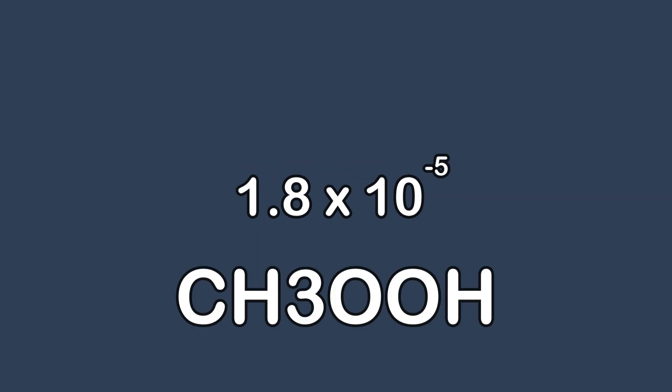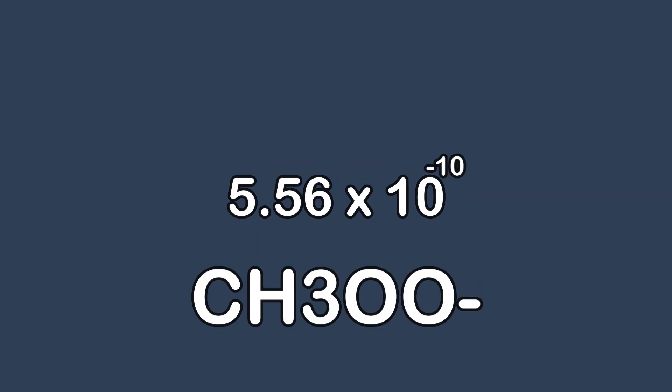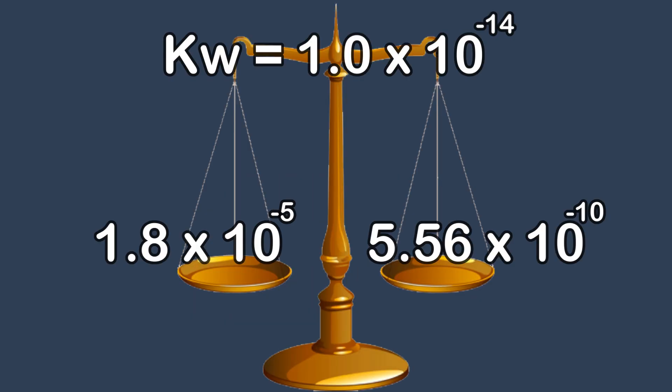For example, acetic acid: its known dissociation constant Ka is 1.8 × 10⁻⁵, and its conjugate base Kb is 5.56 × 10⁻¹⁰. Here they are both on the scale. When you multiply them together, you reach that same constant Kw. Essentially, Ka times Kb must equal Kw — otherwise you did something wrong.